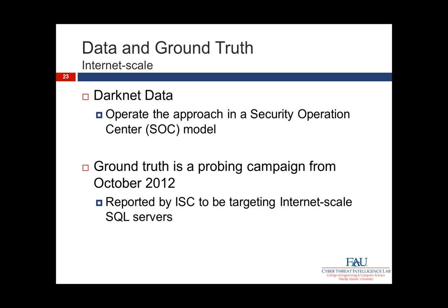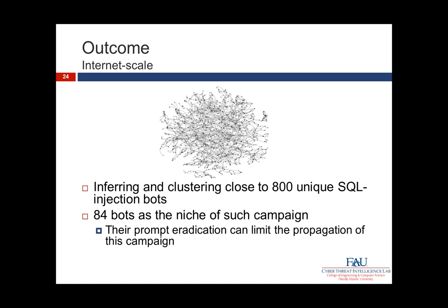Moving to the internet-scale approach: we needed darknet data and a ground truth. The scenario is as it would be in a security operation centre. The ground truth is a probing campaign from October 2012, reported by ICTB targeting internet-scale SQL services. The outcome is that we inferred and clustered close to 800 unique SQL infection bots. Using the similarity of these infected nodes, we identified that 84 of these bots were part of the niche of that campaign. Eradicating those 84 nodes would greatly hinder the progression of the campaign.